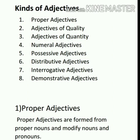Now let's look at the types of adjectives. There are eight main kinds: first, proper adjectives; second, adjectives of quality; adjectives of quantity; numeral adjectives; possessive adjectives; distributive adjectives; interrogative adjectives; and demonstrative adjectives. The first kind is proper adjectives.